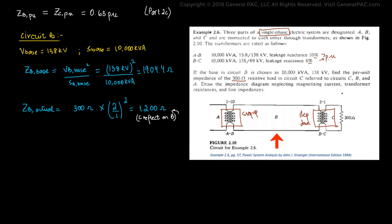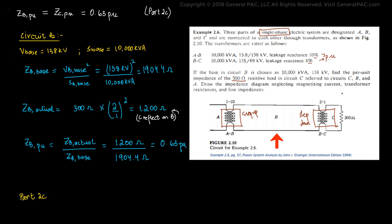When we convert the actual values to per unit, we find they are essentially the same. The per unit impedance of circuit B equals the actual impedance of circuit B divided by the base impedance of circuit B: 1200 ohms divided by 1904.4 ohms, which gives us 0.63 per unit. This is proof of what we learned in Part 2c — that the per unit impedance on both the high voltage side and the low voltage side of a transformer will be exactly the same, just as the per unit impedance of circuit C and circuit B are identical.